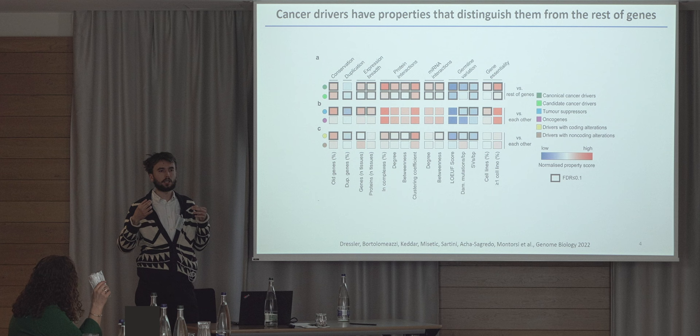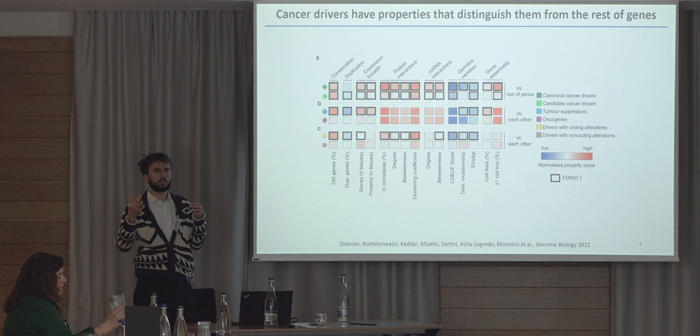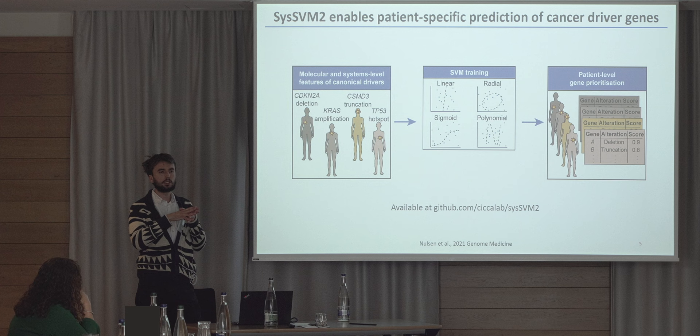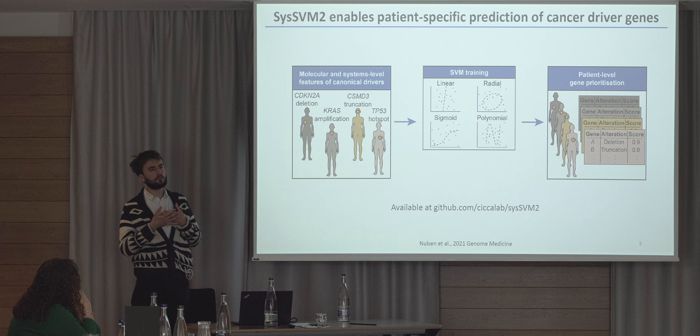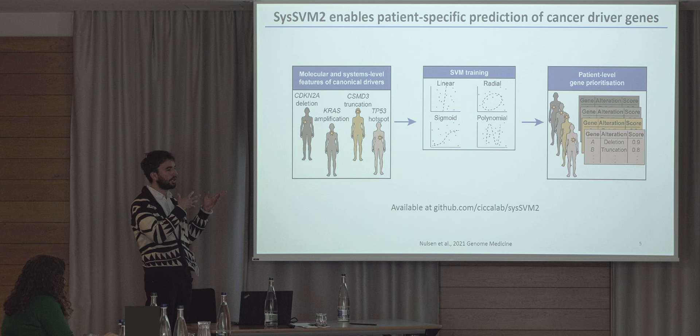This was the rationale: if cancer driver genes have properties that distinguish them from the rest of human genes, maybe we can develop a machine learning algorithm that will learn these properties and help us identify new potential cancer driver genes. We used our TCGA dataset with its extensive annotation of damaged genes, and the molecular annotation and system-level properties became the features of a machine learning algorithm.